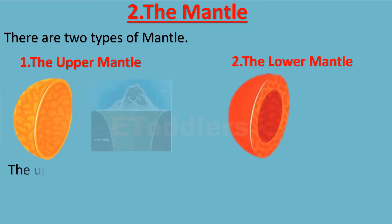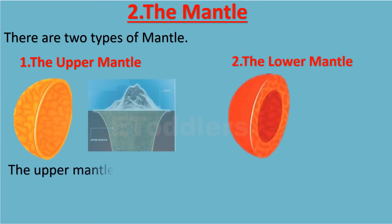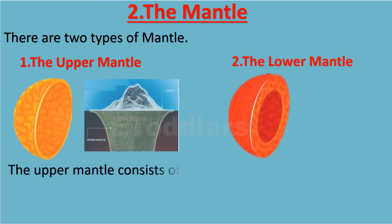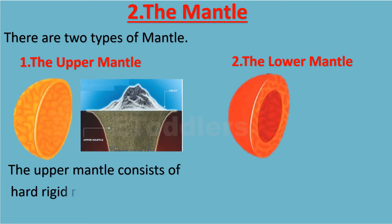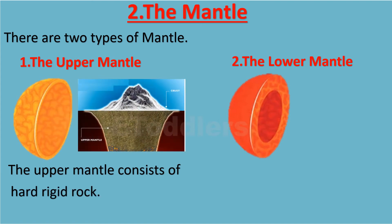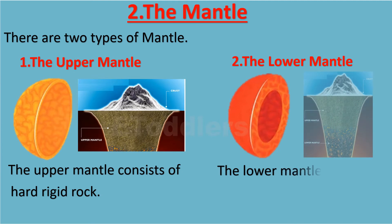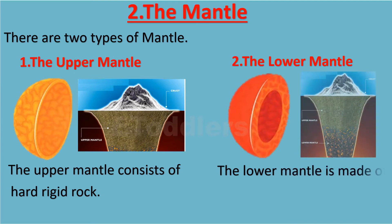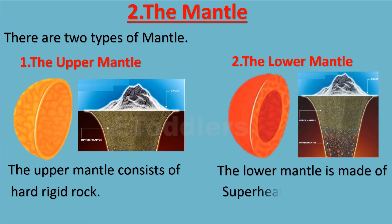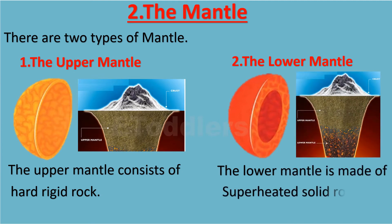The upper mantle consists of hard rigid rock. The lower mantle is made of superheated solid rock.